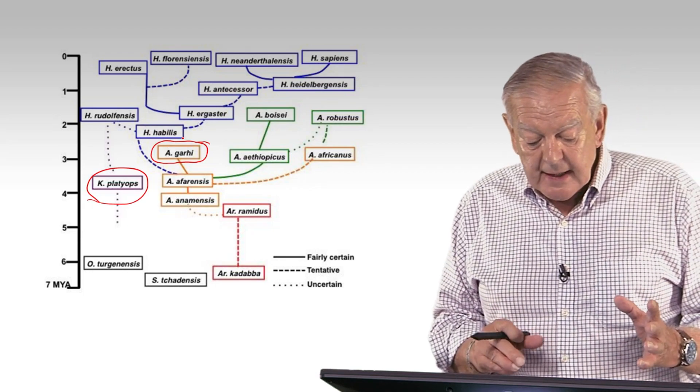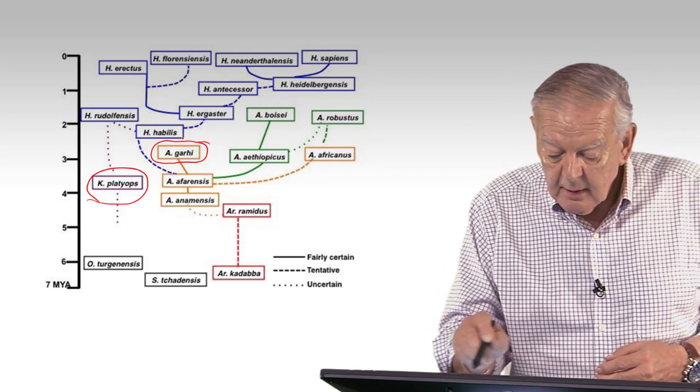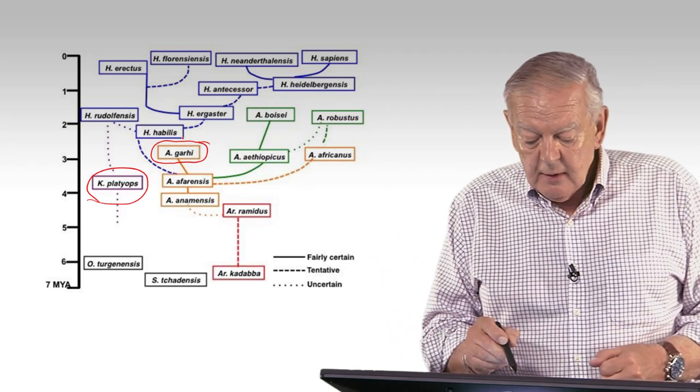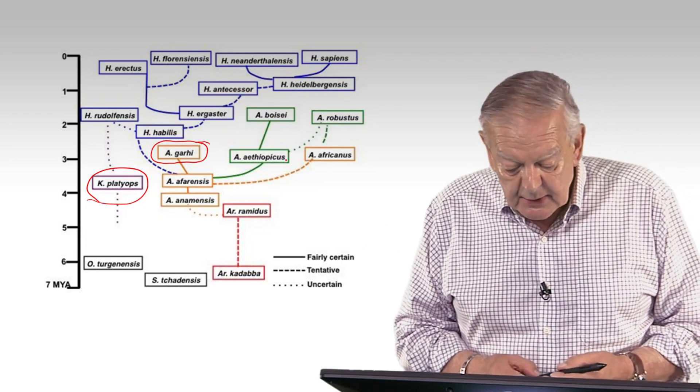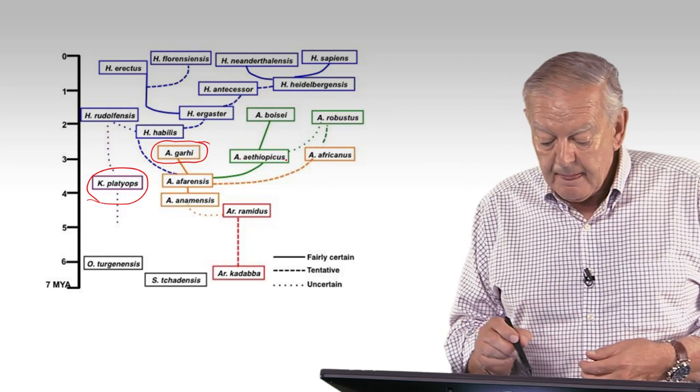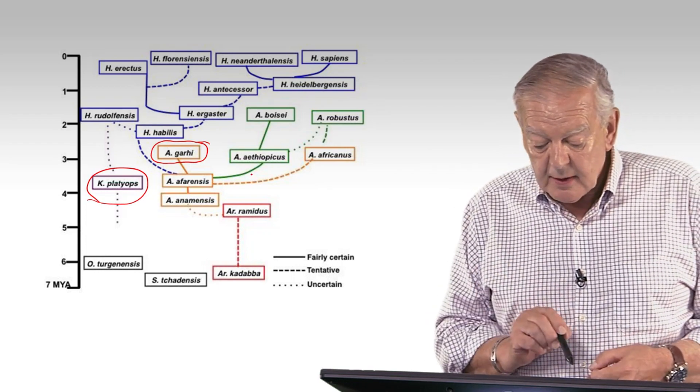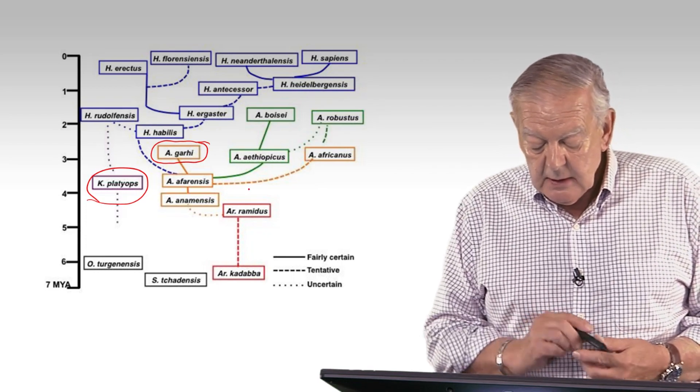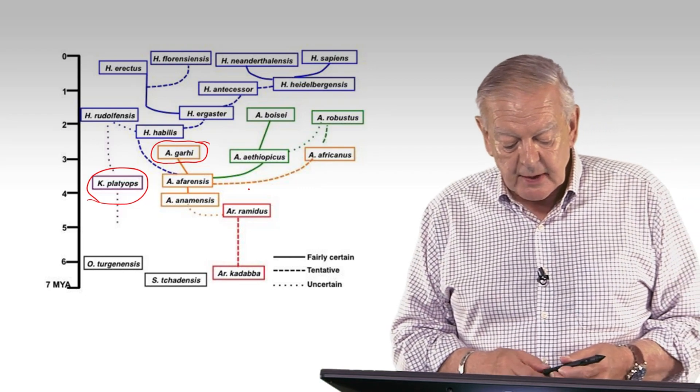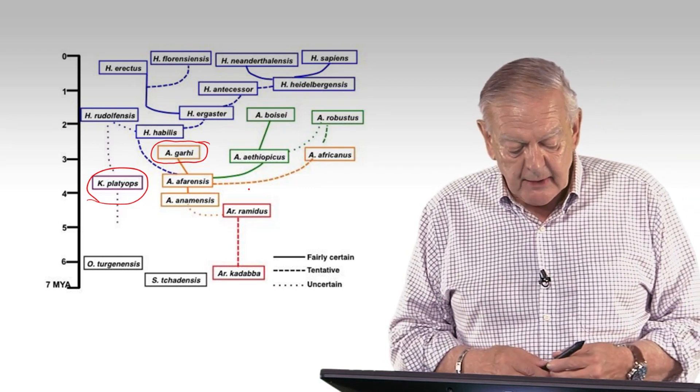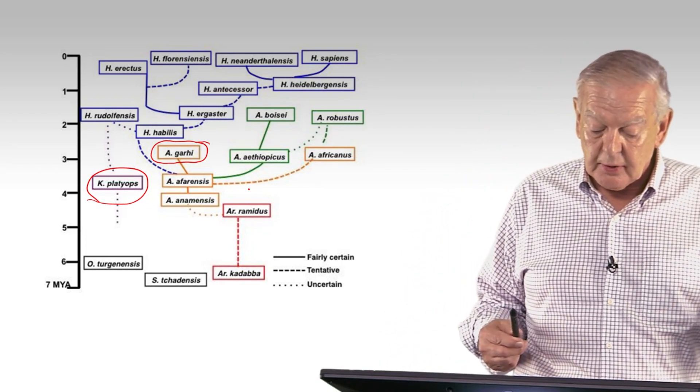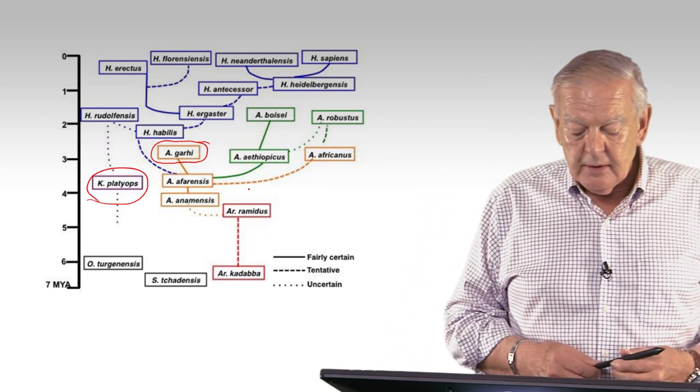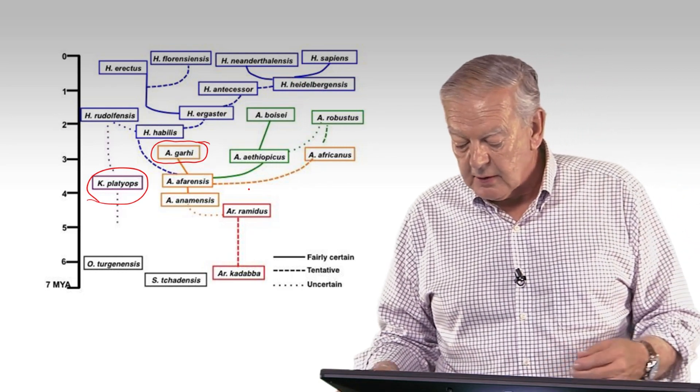Now, the way that this is broken down is that the blue are genus Homo, the green are Australopithecus, robust Australopithecus, the sort of yellowish are other kinds of Australopithecus species, the red, Ardipithecus, and of course, the black, two other species, Tuganensis and Chadensis, that we've talked about earlier.